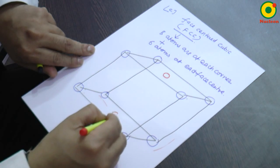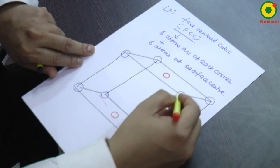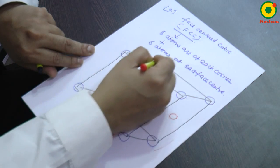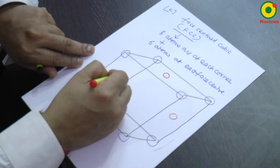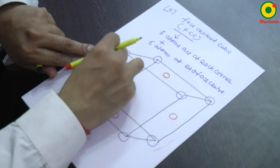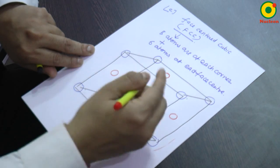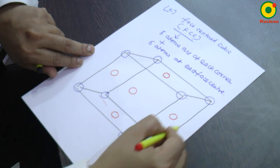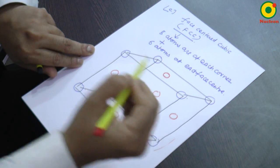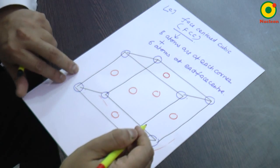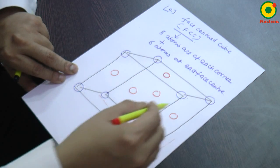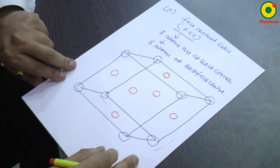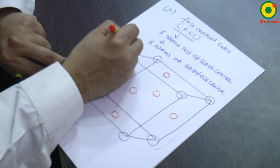One atom at this face center opposite, one atom at this face center, one atom at this face center opposite. Then I can place one atom here on this face and one atom on this face. So this is called the FCC structure, and in FCC structure the coordination number is equal to 12.